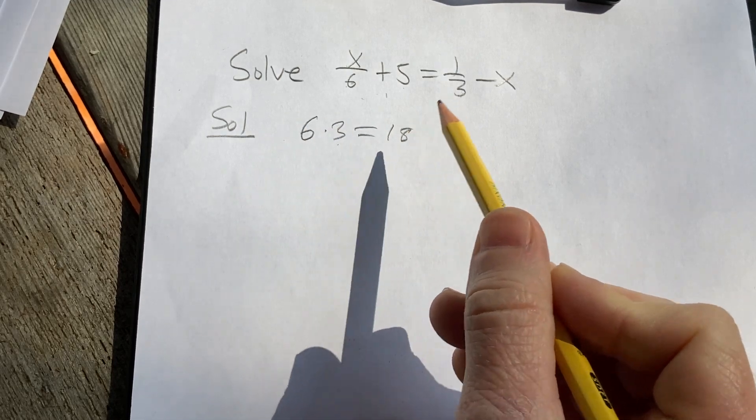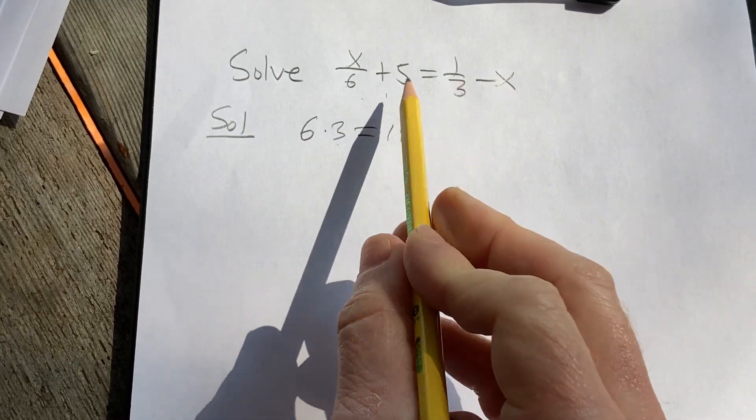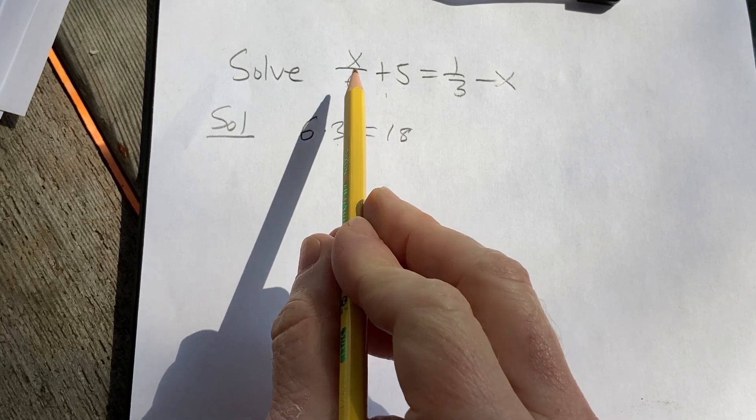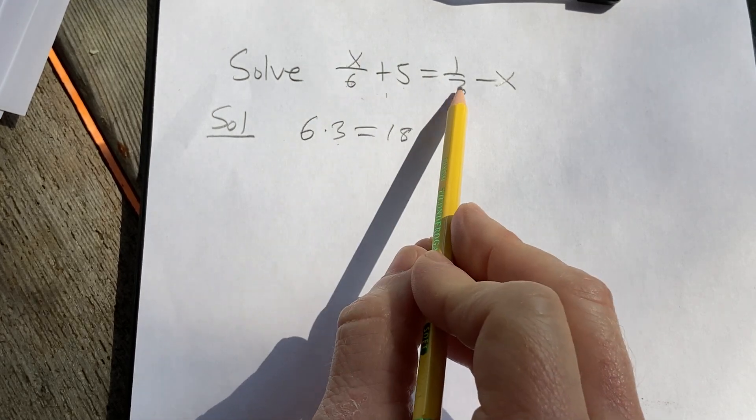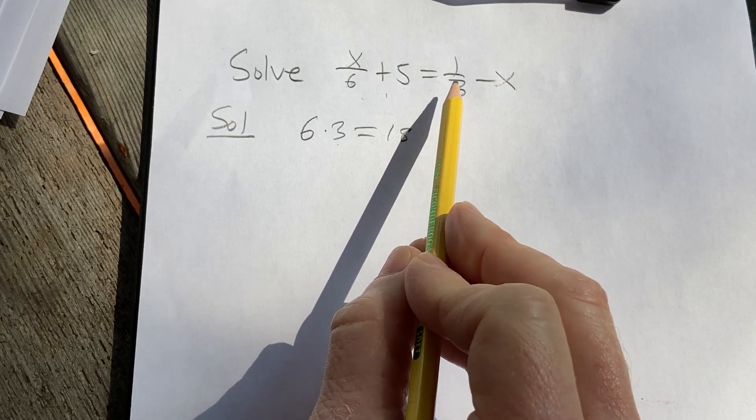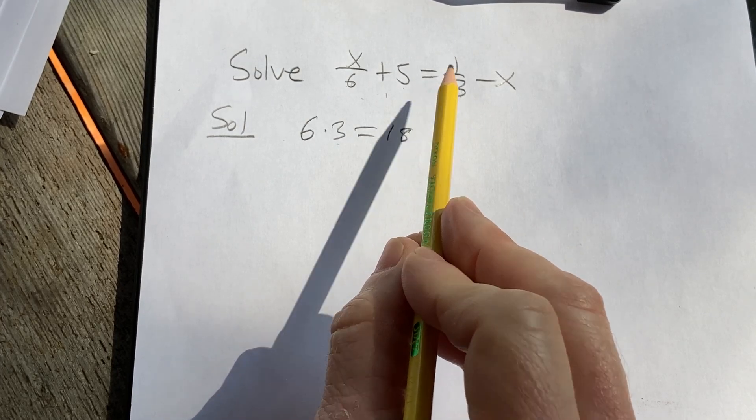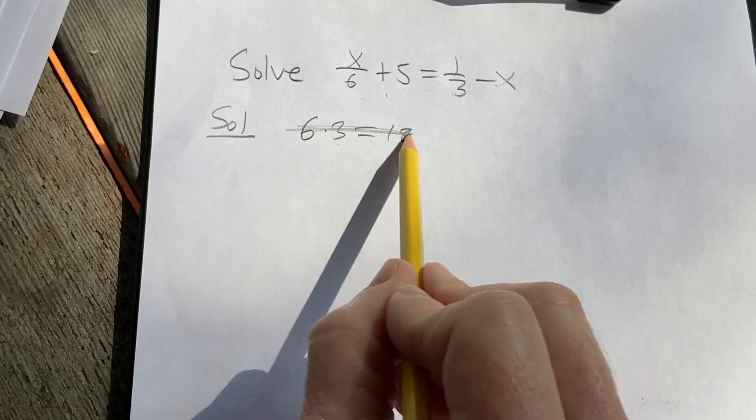So you can certainly do that, and that's always going to work. However, there is an easier way. If you stop for a moment and think, if you multiply by 6, it's going to get rid of the 6. But the 6 is also going to get rid of the 3, because 3 actually goes into 6 two times. So instead of doing this, let's just multiply by 6.